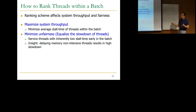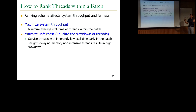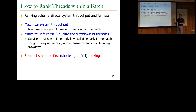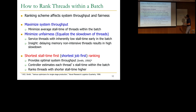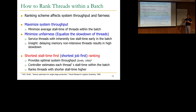So you want to minimize unfairness by servicing low-stall-time threads early, and it turns out these two goals — minimizing average stall time and minimizing unfairness — are similar to each other. If you do shortest-stall-time-first ranking within the batch, you get close to achieving both. There's a lot of theory behind shortest-job-first — this is essentially shortest job first. For a single server queue with no row-buffer locality and no bank-level parallelism, this is optimal for system throughput. We'd like to estimate each thread's stall time within the batch and rank threads with shorter stall time higher.